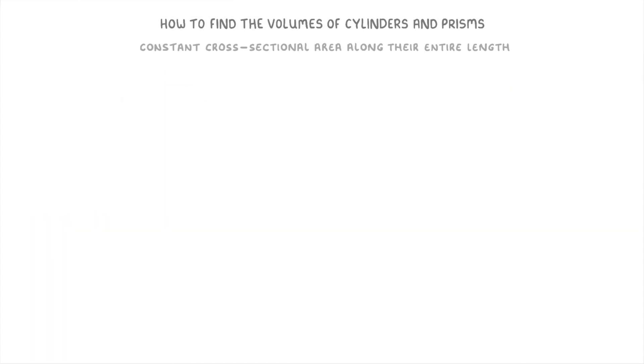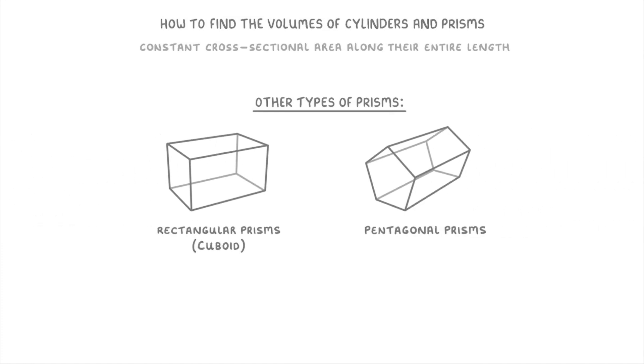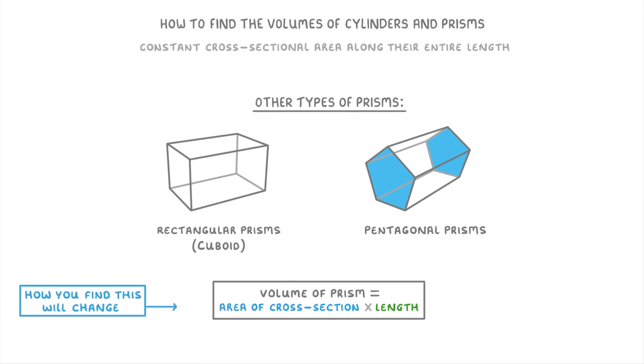One last thing to mention is that there are loads of other types of prisms as well. Like rectangular prisms, which are also known as cuboids, and pentagonal prisms, which have pentagons at either end. Whatever type of prism it is though, the formula of volume of prism equals area of cross-section times the length will always work. It's just how you find the area of that cross-section that will change between different types of prisms.